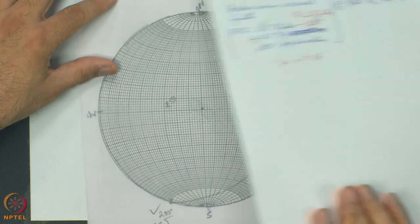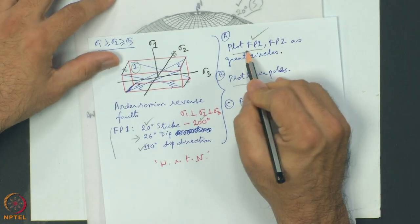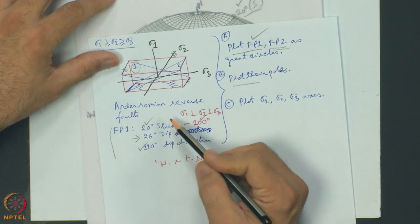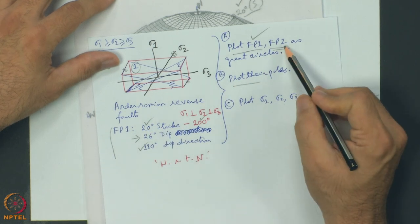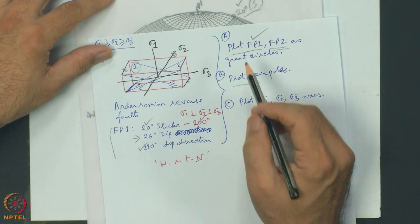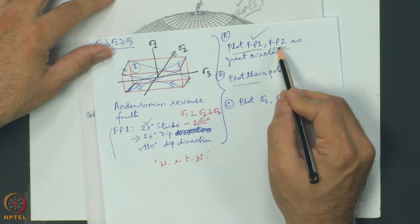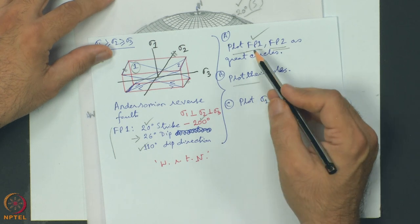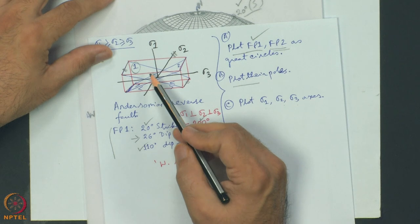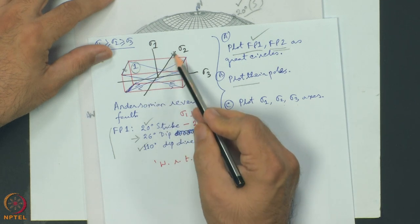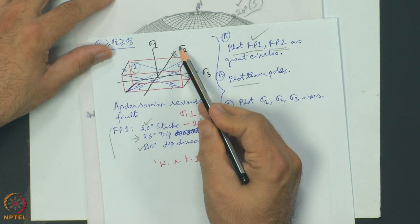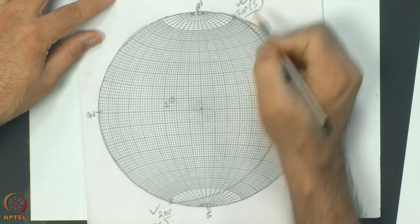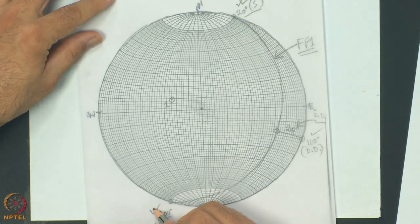Next, plot fault plane 2 as a great circle. Fault plane 1's attitude was given and drawn, but fault plane 2's attitude is not given. It is only said that fault plane 2 is conjugate to the Andersonian fault plane 1, which is a reverse fault. As seen in the diagram, both fault plane 1 and fault plane 2 have the same strike line - so fault plane 2 will also have 20 degree and 200 degree strike. These two remain fixed.